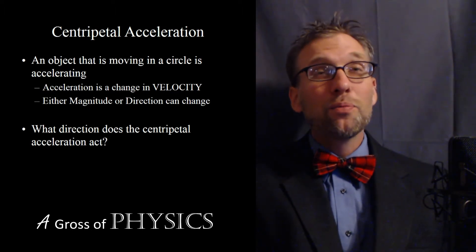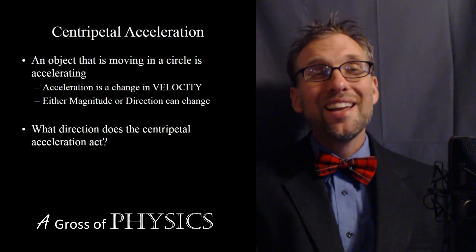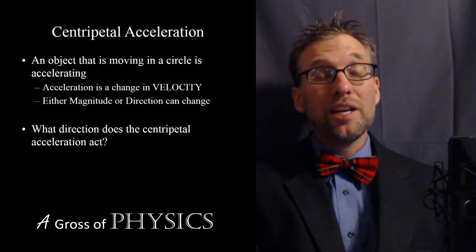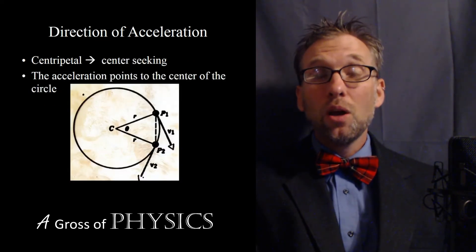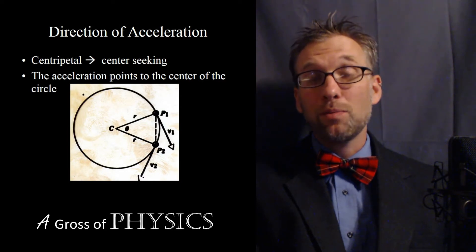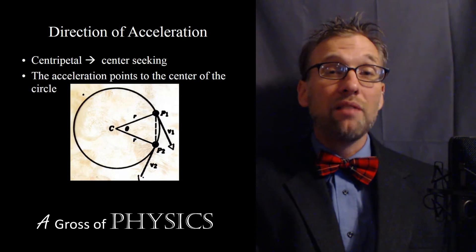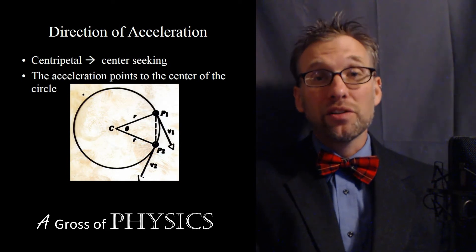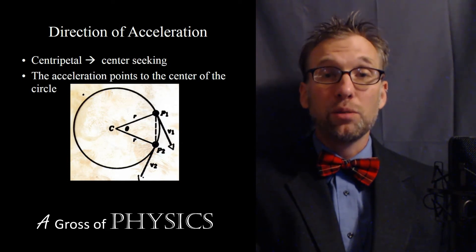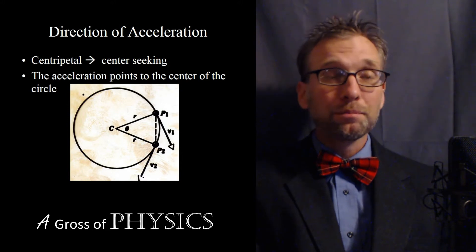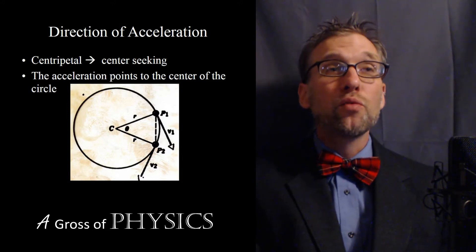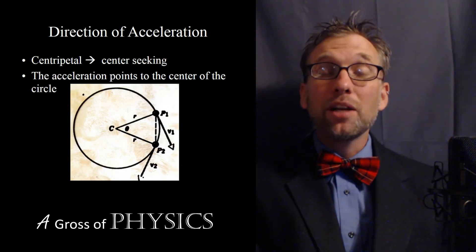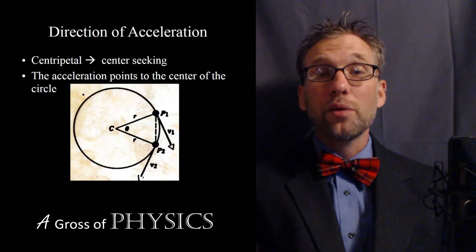The problem we have with our traditional equations is that we often deal with velocities, and velocities deal with displacements. When you travel in a circle, you are going to have a displacement of zero, which would effectively cause us to have a velocity of zero as well. So what we're going to need to use is not the vectors in this case, but instead the scalar version — speed. We're not going to have to worry about the direction of speed when dealing with centripetal acceleration, because it will always act to the center of the circle.